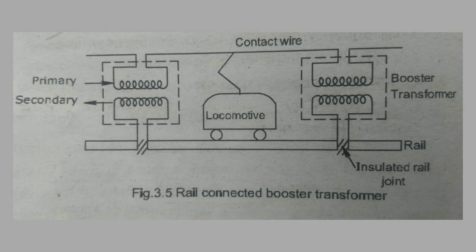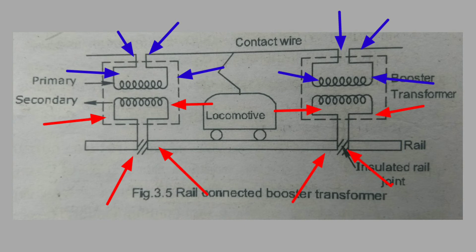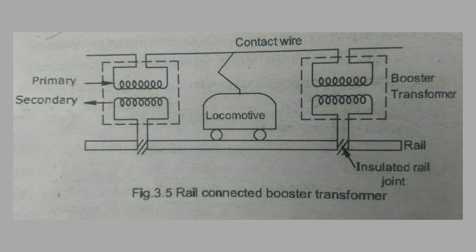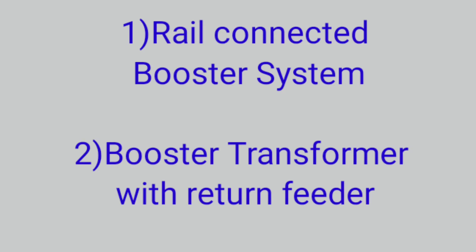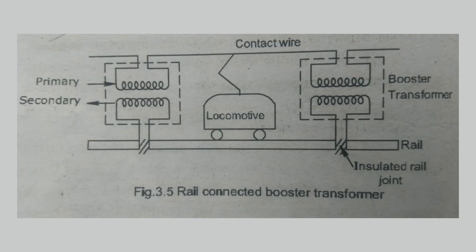In the AC Traction System, we connect the primary and secondary winding to the track. The same current flows in the primary and secondary windings. There are two methods in Booster Transformers: one is the Rail Connected Booster System, and another is the Booster Transformer with Return Feeder. This video focuses on the Rail Connected Booster System.